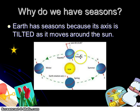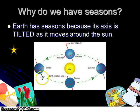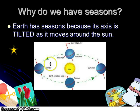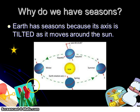Then as we continue to revolve around the sun, there comes a point in which our northern axis is tilted towards Polaris; however, this means we are actually tilted away from the sun. So we have less direct sunlight in our northern hemisphere, and this gives us winter.